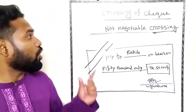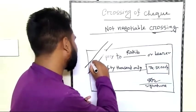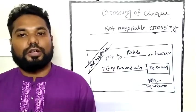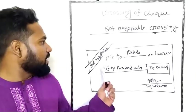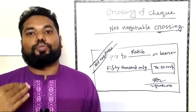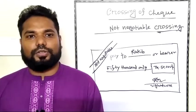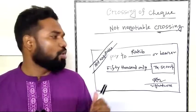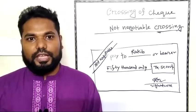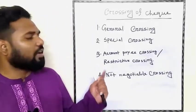Now for not negotiable crossing. If the title of the transferor is defective, then the transferee also gets a defective title. The transferor defect is transferred to the transferee.